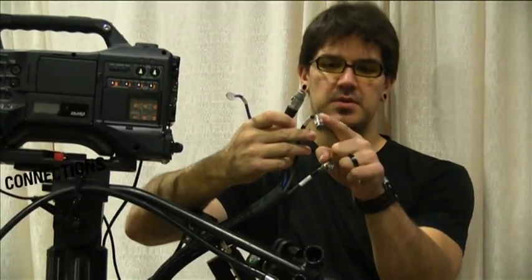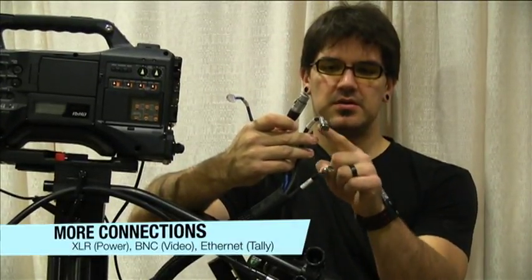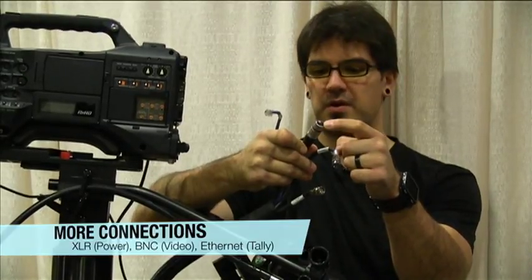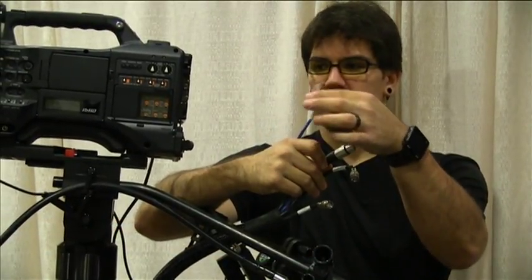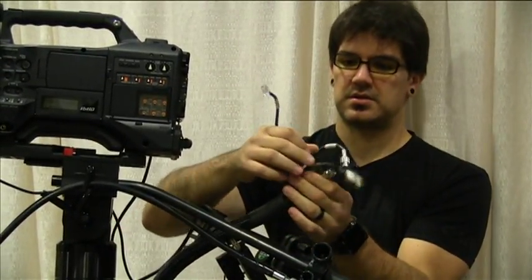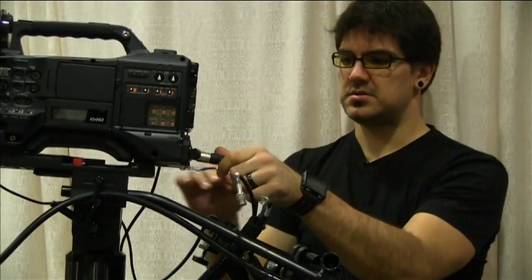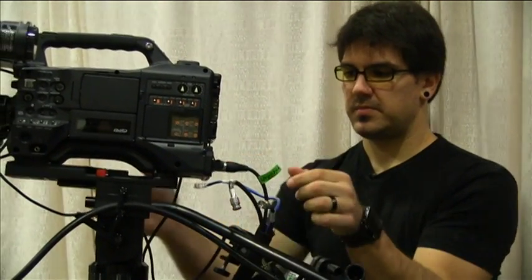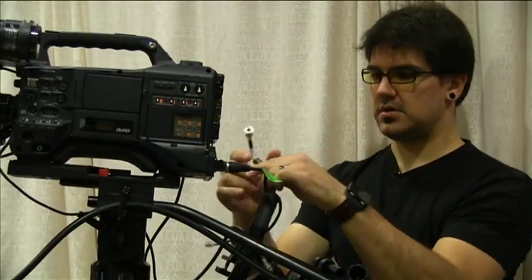This cable cluster, sometimes called a molt, contains two BNC connections, an XLR power cable, and an Ethernet cable for your red tally light. There's also a third BNC cable that connects your viewfinder that is not part of this molt. Each cable is properly labeled.